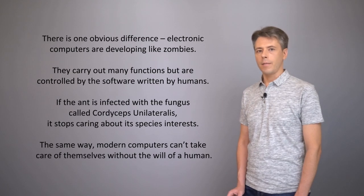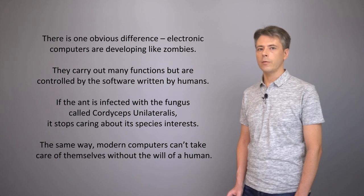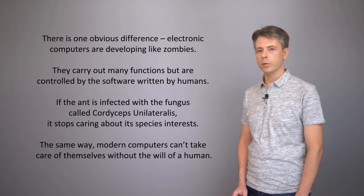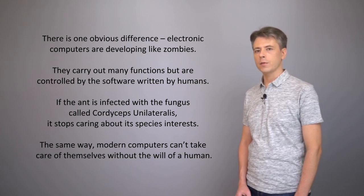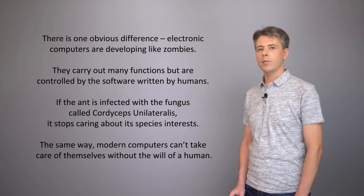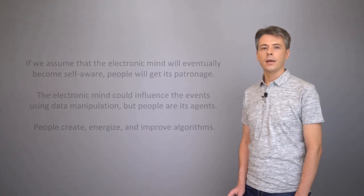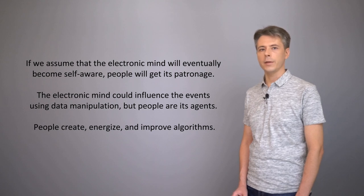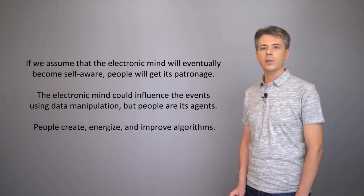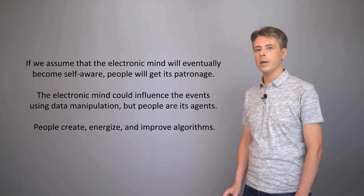There is an obvious difference. If an ant is infected with the fungus called Cordyceps unilateralis, it stops caring about its species' interests. The same way, modern computers can take care of themselves without the will of a human. If we assume that the electronic mind will eventually become self-aware, people will get its patronage. The electronic mind could influence the events using data manipulation, but people are its agents.